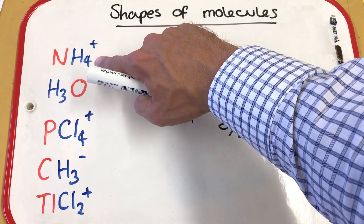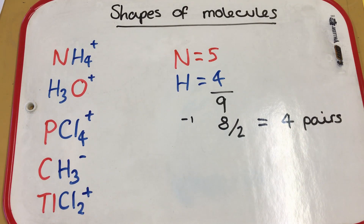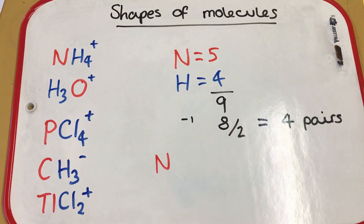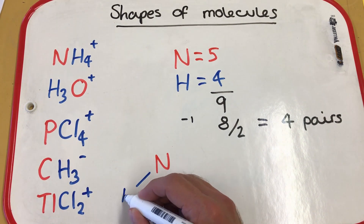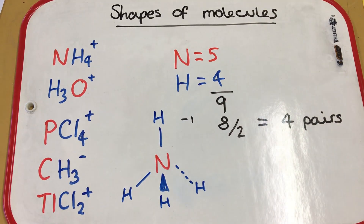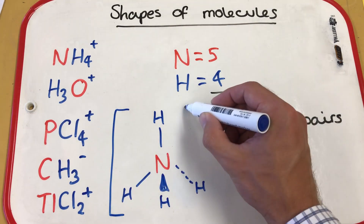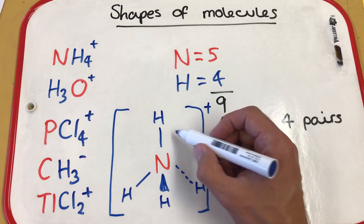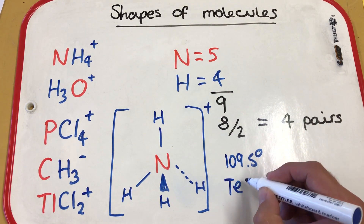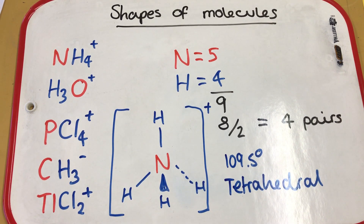We have four pairs of electrons. Comparing back to the structure, we have four hydrogens bonded, so all pairs are involved in bonding and there are no lone pairs. That means we have a tetrahedral molecule — nitrogen in the center, one hydrogen on the plane of the board, one coming towards you, one going away, and one more on the flat plane. The bond angles are 109.5 degrees, giving us a tetrahedral shape.